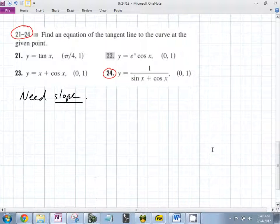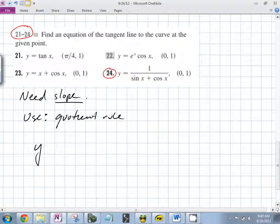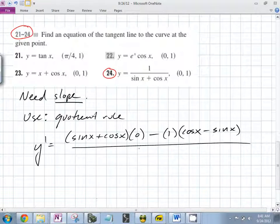So what do we need to find? What do we have to use? What rule? Quotient rule. So y prime is going to be equal to low. What's the derivative of the top? Zero. Low, d high, what? Minus. High. What's the derivative of sine? Sine x. All over sine x plus cosine x.